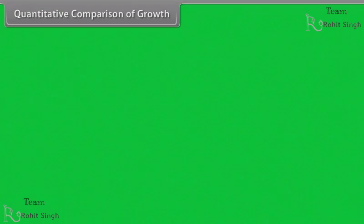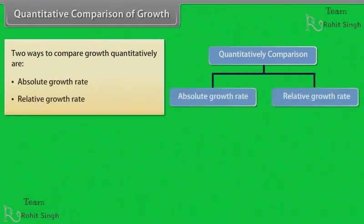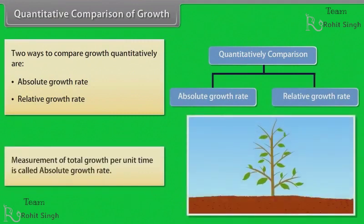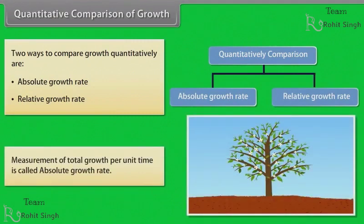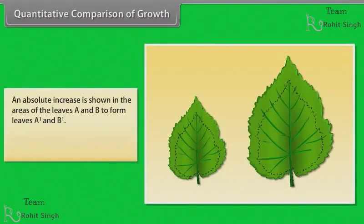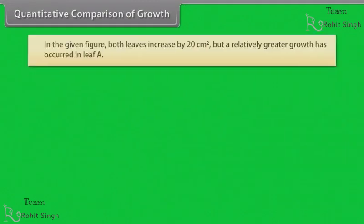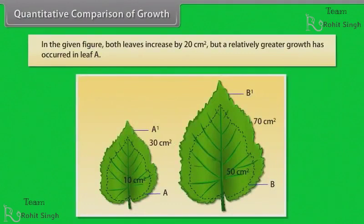Two ways to compare growth quantitatively are absolute growth rate and relative growth rate. Measurement of total growth per unit time is called absolute growth rate. An absolute increase is shown in the areas of leaves A and B to form leaves A1 and B1. Growth of a given system per unit time is called relative growth rate. In the given figure, both leaves increase by 20 cm² but a relatively greater growth has occurred in leaf A.